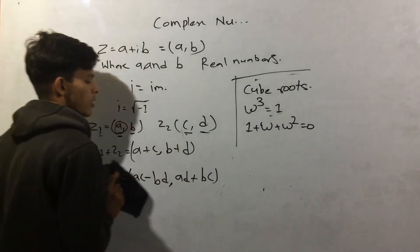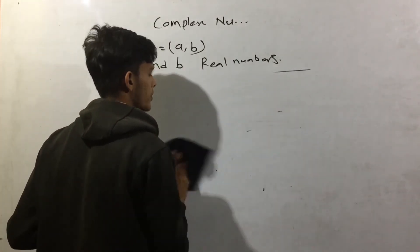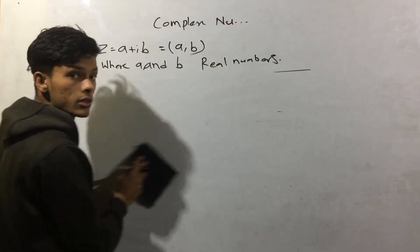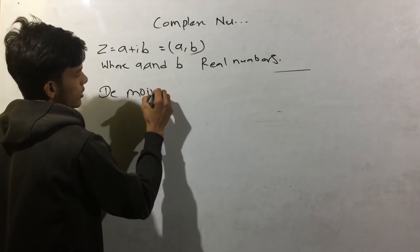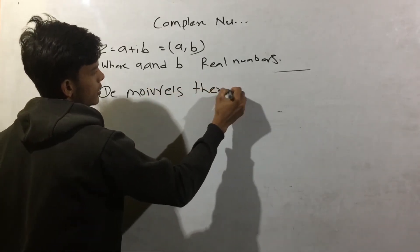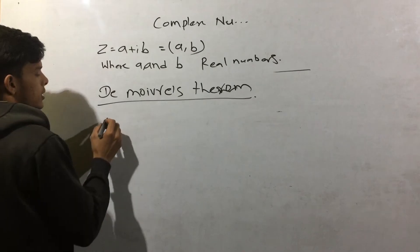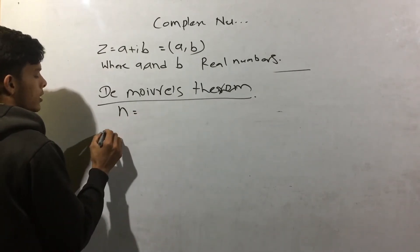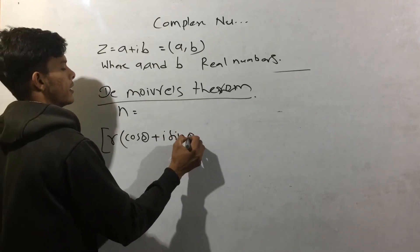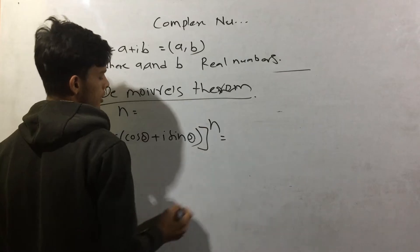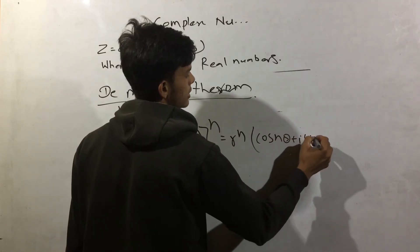Now we have De Moivre's theorem. The statement of the theorem is: r times the quantity cosine theta plus i sine theta, raised to the power n, is equal to r times the quantity cosine n theta plus i sine n theta.